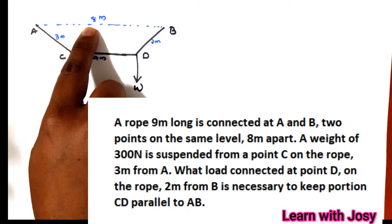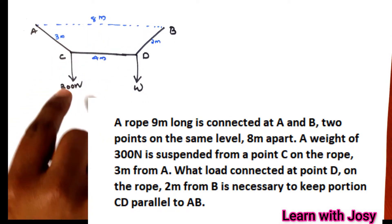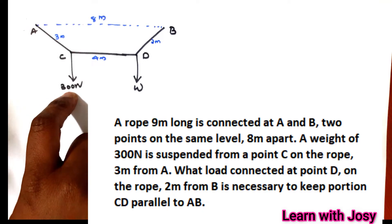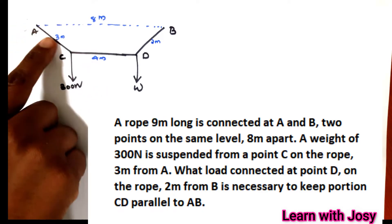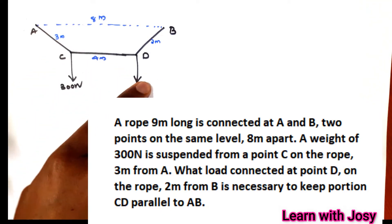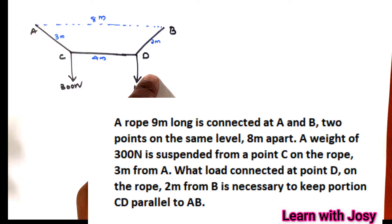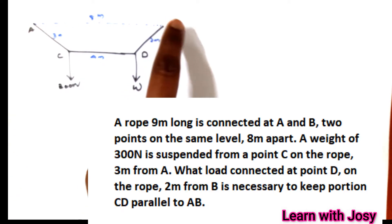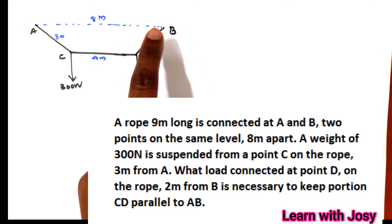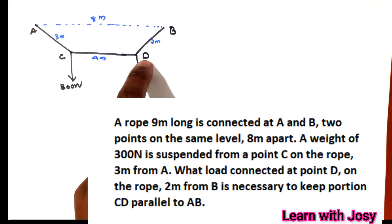A weight of 300N is suspended from point C. The length AC is 3m. The load is connected at point D, 2m from B, necessary to keep portion CD parallel to AB. The distance from B to point D is 2m.